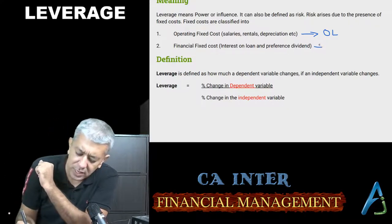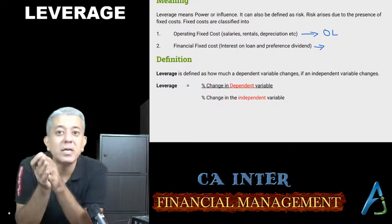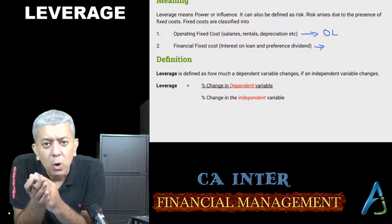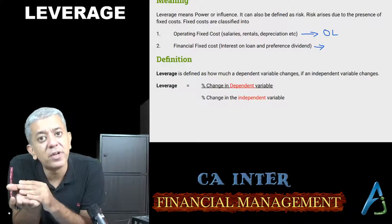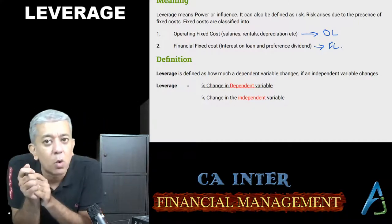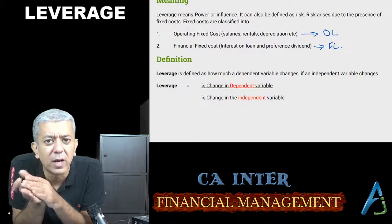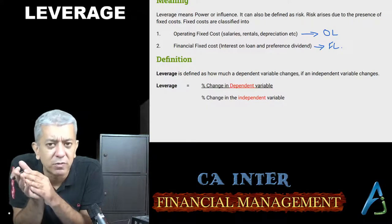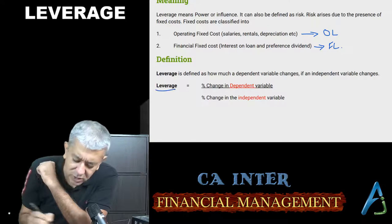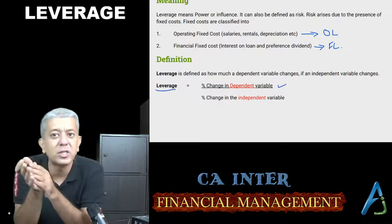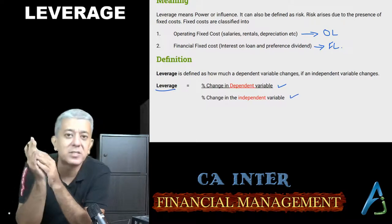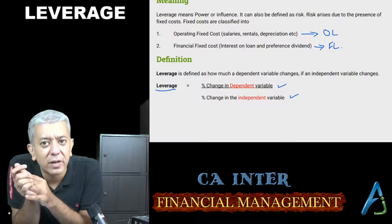Financial fixed cost ki wajah se jo risk aata hai, hum usko financial risk bolte hain. Aur jo leverage usko measure karta hai, that will be called financial leverage. Overall leverage ka ek hi formula hai based upon which every other formula is derived, and that is: leverage is defined as percentage change in dependent variable divided by percentage change in independent variable.